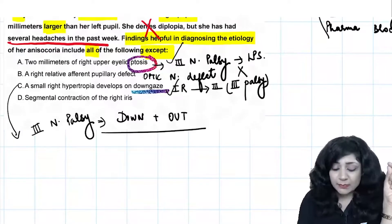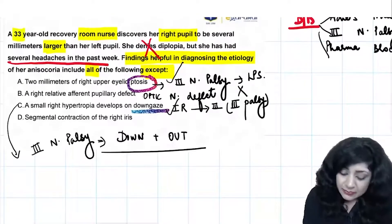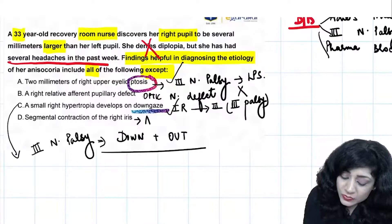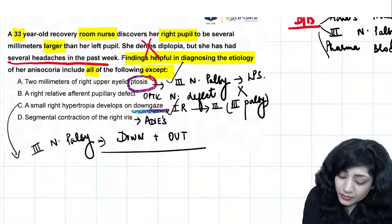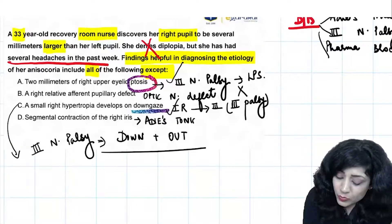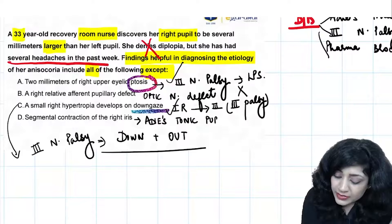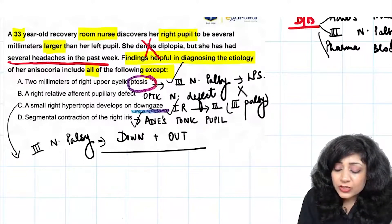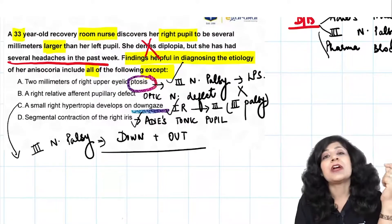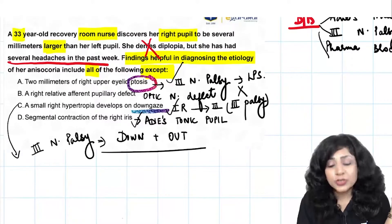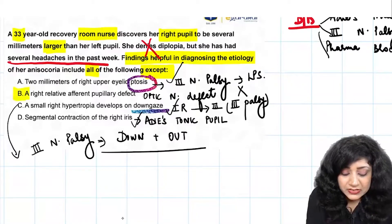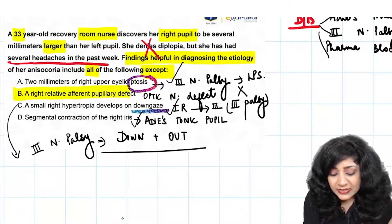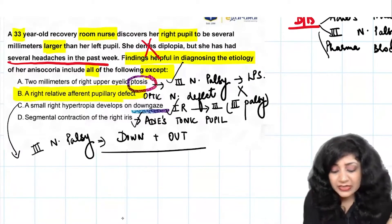Option D: segmental contraction of the iris. Segmental contraction of the iris is found in Adie's tonic pupil. So yes, this could also be present. So what should our answer be? What is NOT helping us find the etiology of this anisocoria? The answer is the right relative afferent pupillary defect — RAPD.